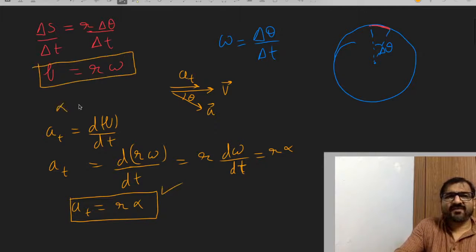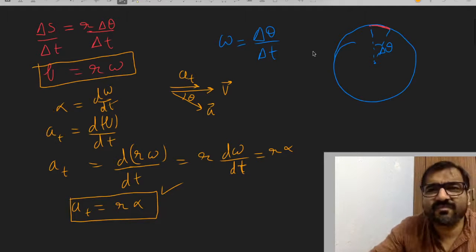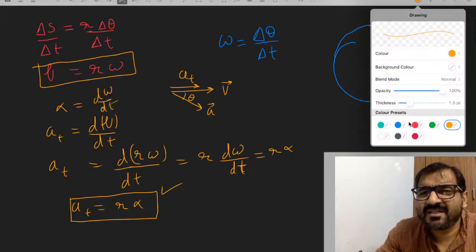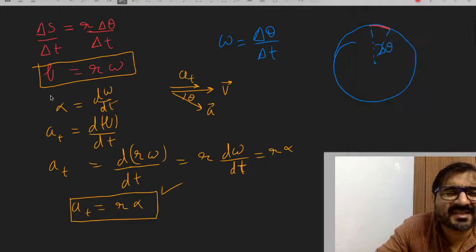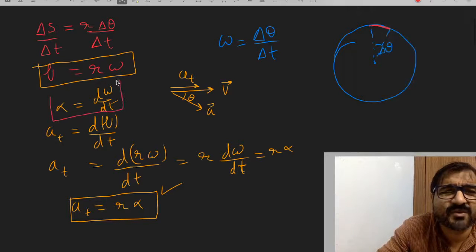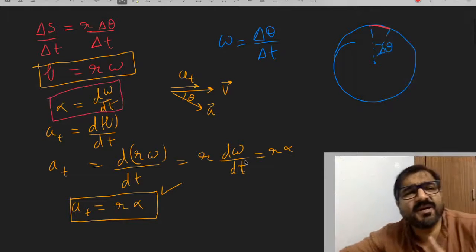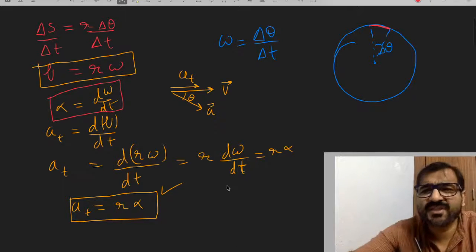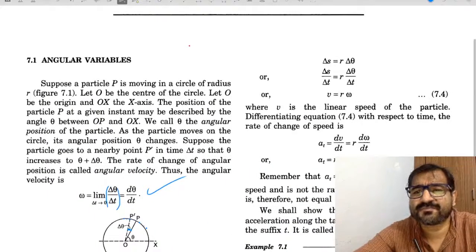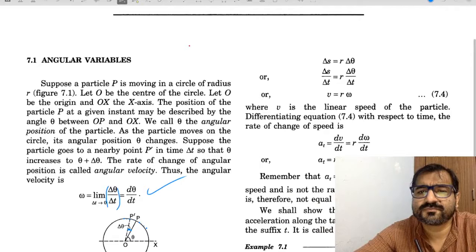And alpha is what? It's written there - d omega by dt. These are very simple formulas. There's nothing much to learn here, but I've explained once for the sake of completion.